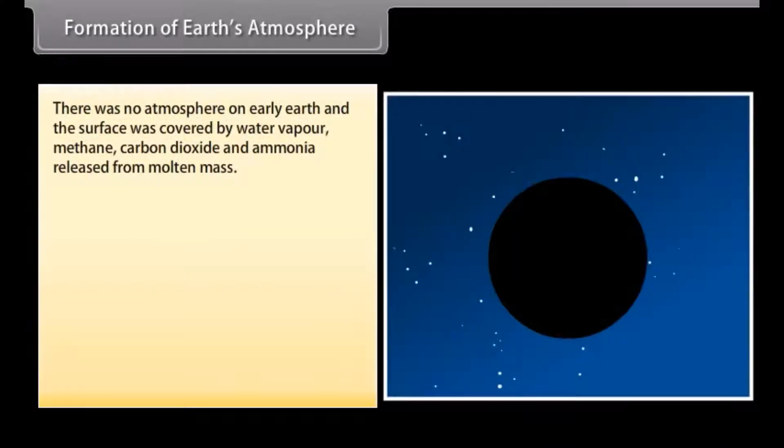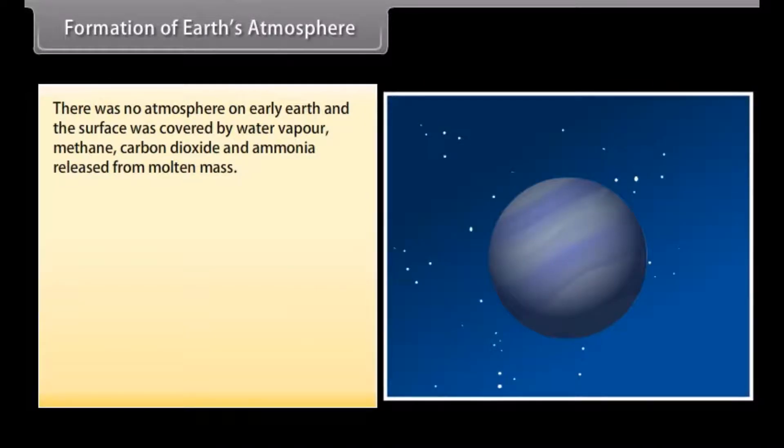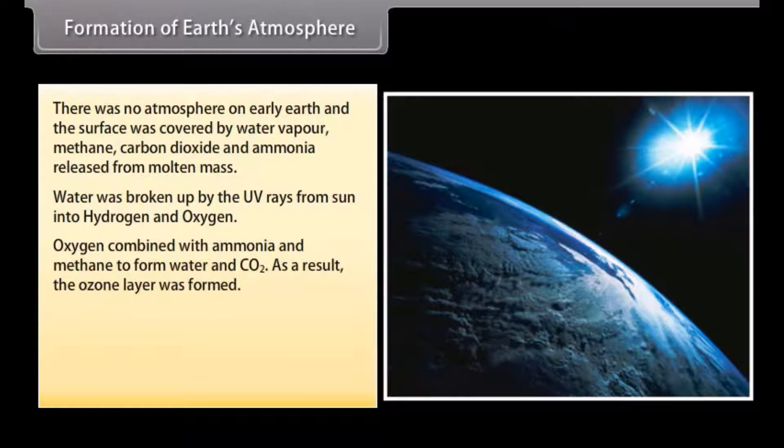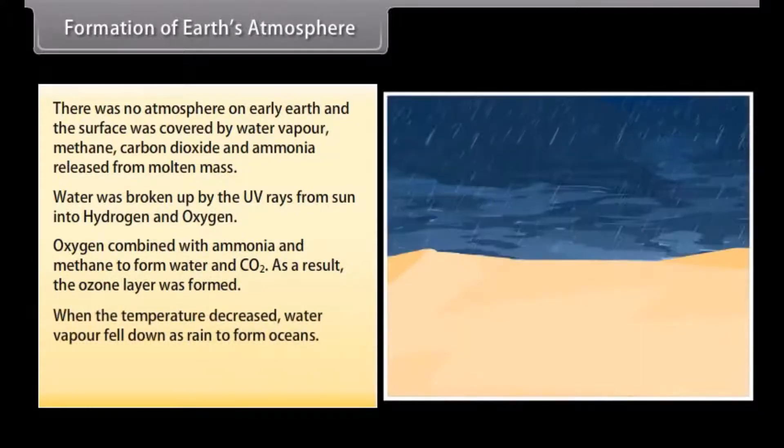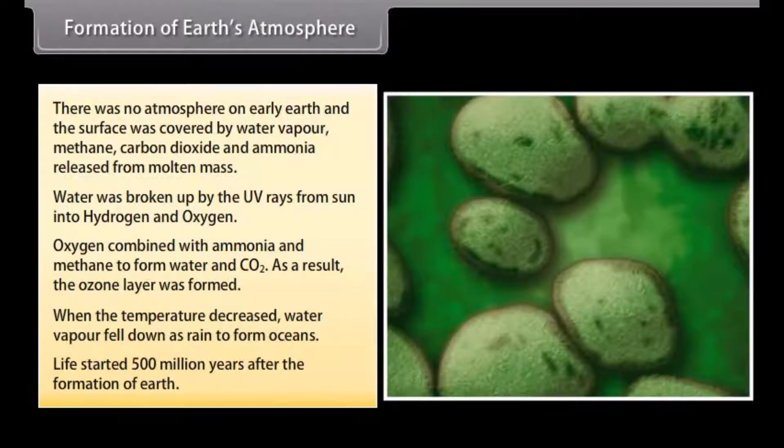Formation of earth's atmosphere. There was no atmosphere on early earth. The surface of earth was covered by water vapor, methane, carbon dioxide and ammonia released from molten mass. Water was broken up by the UV rays from sun into hydrogen and oxygen. Oxygen combined with ammonia and methane to form water and CO2. As a result, the ozone layer was formed. When the temperature decreased, water vapor fell down as rain to form oceans. Life started 500 million years after the formation of earth.